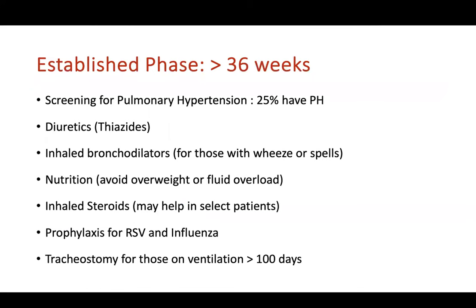After the evolving phase comes the established phase: the baby has required oxygen for more than 28 days and at 36 weeks is still on respiratory support, and is therefore labeled as bronchopulmonary dysplasia. In these babies, one should screen for pulmonary hypertension because treating lung disease alone is insufficient — we also need to reduce pulmonary vascular resistance. Approximately 25% of babies with BPD are likely to have significant pulmonary hypertension.